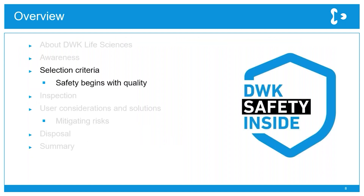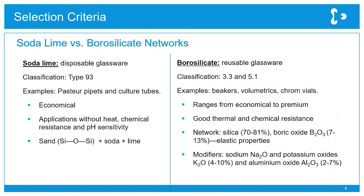Safety really begins with quality and selection criteria. There are two types of glass commonly used in the lab: soda lime and borosilicate. Soda lime is usually used for disposable glassware such as Pasteur pipettes and culture tubes. This application tends not to involve heat, and chemical resistance and pH sensitivity aren't important. The formulation is very simple: sand plus soda plus lime.